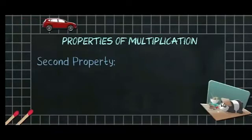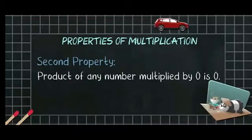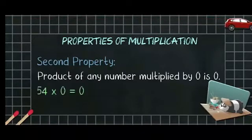The product of any number and 0 is 0. For example, 54 into 0 is equal to 0 and 26 into 0 is equal to 0.